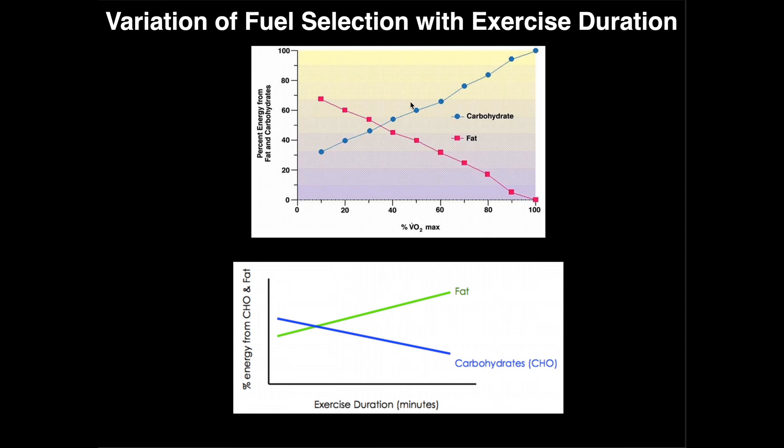So this is an important concept to understand, but what you'll see here is this graph looks awfully similar to this graph over here, but it tells you something extremely different. The one we just discussed is how the fuel source changes with intensity of the exercise, which is measured as a percent of VO2 max. This one on the bottom is the variation of the fuel source with exercise duration, not the intensity.